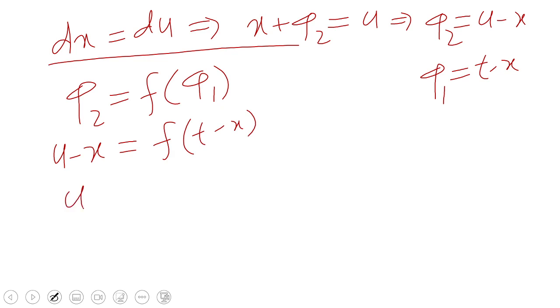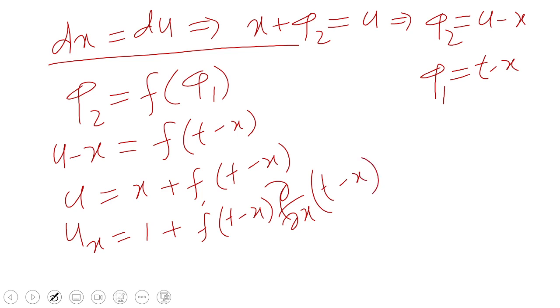So that means U is equal to X plus F of T minus X. So UX is equal to, we have to differentiate, that means differentiation partially with respect of T minus X. So totally I get 1 minus F dash of T minus X because I will get minus 1 from here.